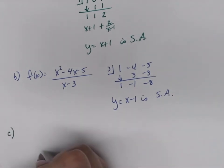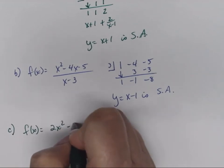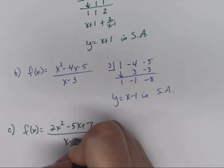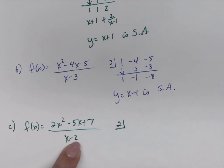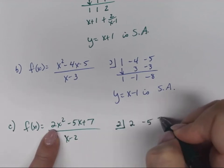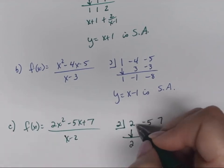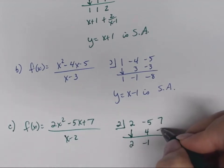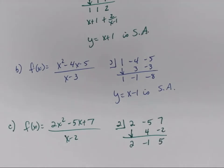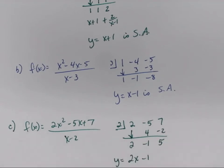Part C: f(x) = (2x²-5x+7)/(x-2). Synthetic division with c = 2, coefficients 2, -5, 7. Bring down 2; 2×2 = 4; 4+(-5) = -1; (-1)×2 = -2; 7+(-2) = 5. The polynomial part is 2x-1, so the slant asymptote is y = 2x-1.